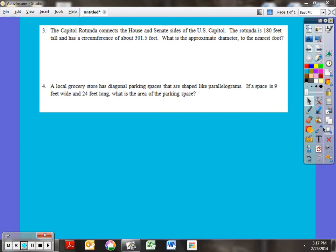Number three, not as successful, but maybe after today's lesson with circumference it might help you open up your eyes to this problem. So it says, the Capitol Rotunda connects the White House and Senate sides of the U.S. Capitol. The rotunda is 180 feet tall and has a circumference of about 301.5 feet. What is the approximate diameter to the nearest foot?